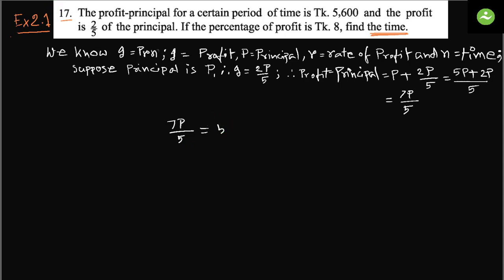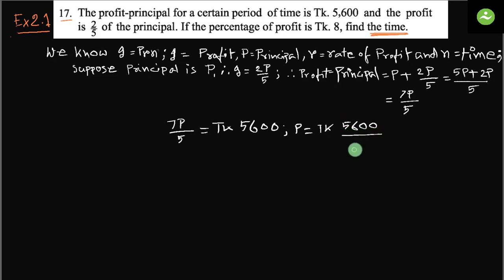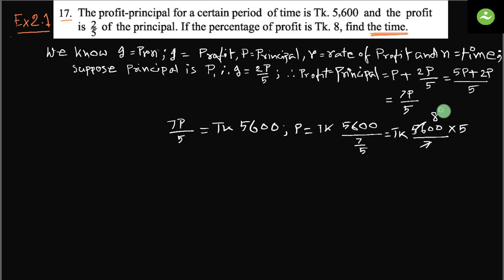So seven P by five equals taka 5600. Therefore P equals taka 5600 divided by seven by five, which we simplify — taka 5600 times five divided by seven. So we get the value of P.